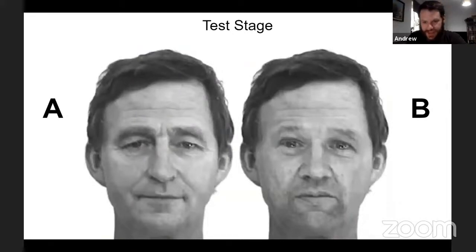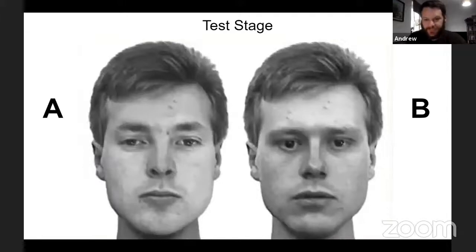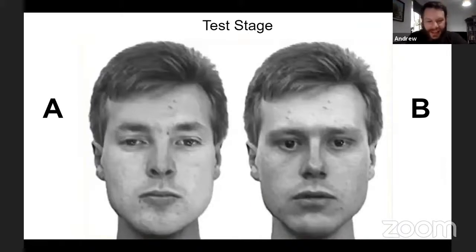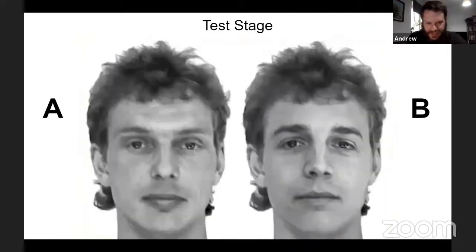We have A's across the board — A from Sam, Ellen, and Erica. Here are the next set of faces. B's across the board. And here's the third set of faces — we have two A's and a B. So this one's a little bit more confusing.